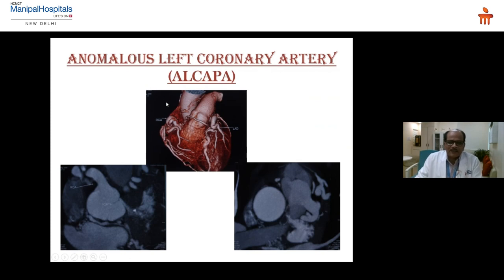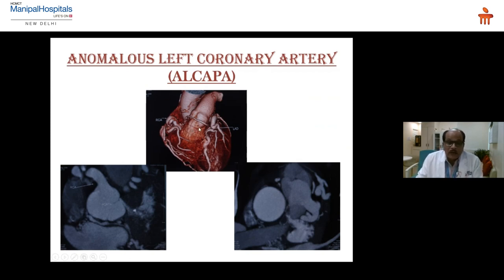A very interesting case: a 48-year-old woman presented with dyspnea only. Catheterization was attempted and they could not cannulate the left coronary artery, so CT was done. We can see a very prominent right coronary artery — the RCA is very large. The left main is not visualized from the aorta. On the next phase, the LMA is seen originating from the pulmonary artery — this is ALCAPA: anomalous left coronary artery arising from the pulmonary artery.